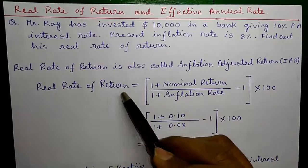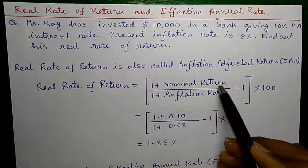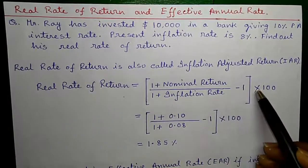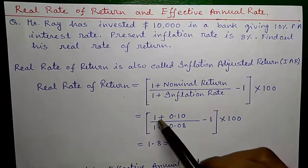So, real rate of return is given by 1 plus nominal return divided by 1 plus inflation rate minus 1 into 100. Let's put the values.